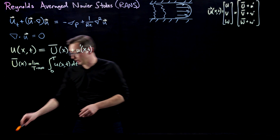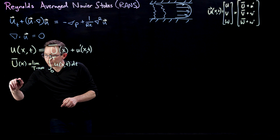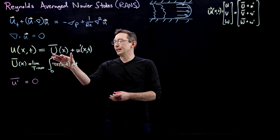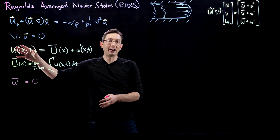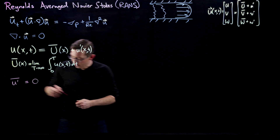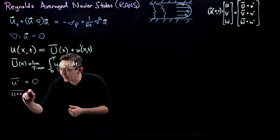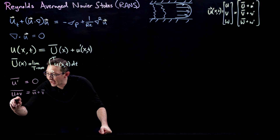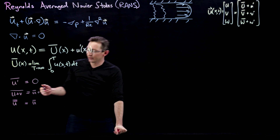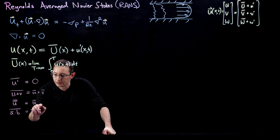Before we do that, there are a few key properties of time averages. First, the time average of u prime equals zero — because u prime is by definition everything not in the time average of u, so it's already zero-centered with zero mean. Second, linearity holds: the average of (u + v) equals the average of u plus the average of v. Third, double-averaging: the average of ū is just ū — you can't change it by averaging again.